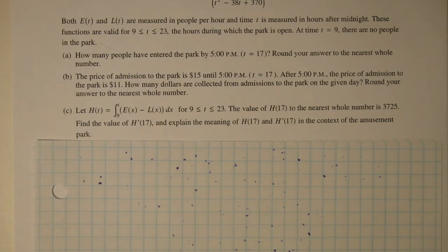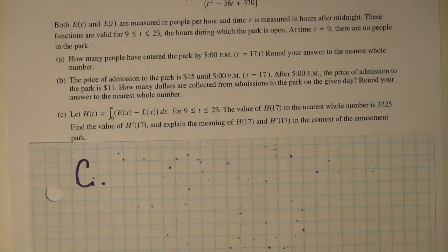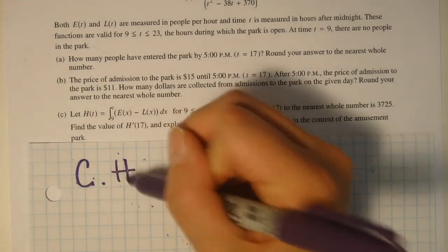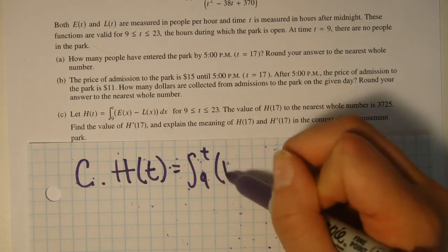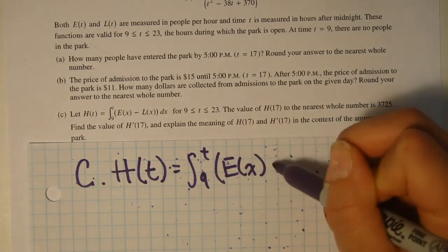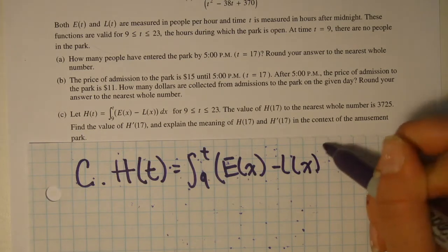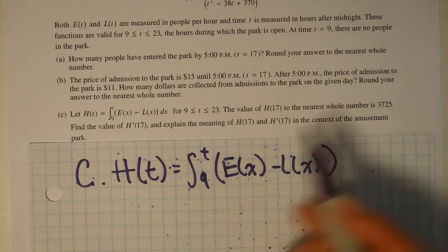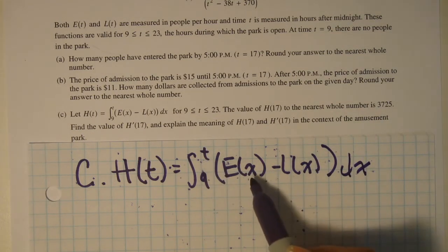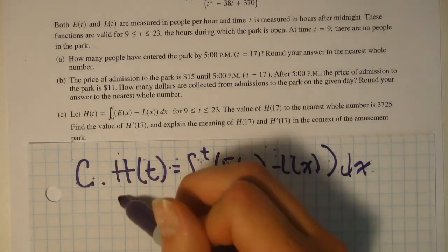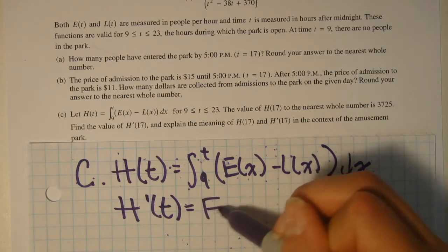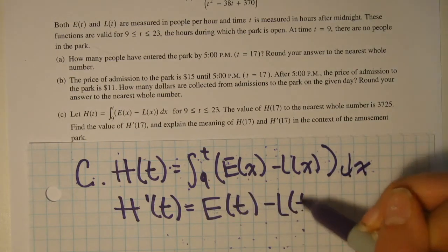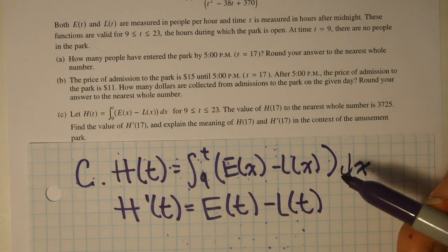The value of h(17) to the nearest whole number is 3725. Find the value of h'(17). Now for part C, we must find the derivative of h(t). They give us this. Using the fundamental theorem, this should be fairly easy because we could just plug in t into our x's and multiply by the derivative. So we should get that h'(t) equals E(t) minus L(t) times the derivative of t, which is just 1.